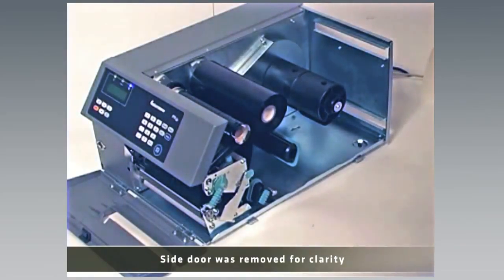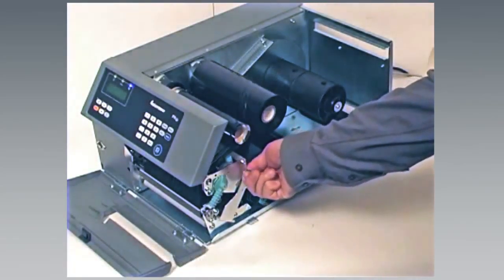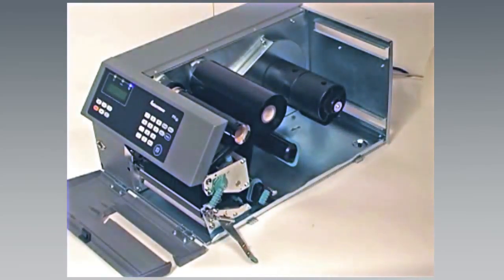Start by opening the front door and media cover. If you are installing the media on a PX6i model, you will need to pull down the locking handle. This does not apply to the PX4i or PA30 models.